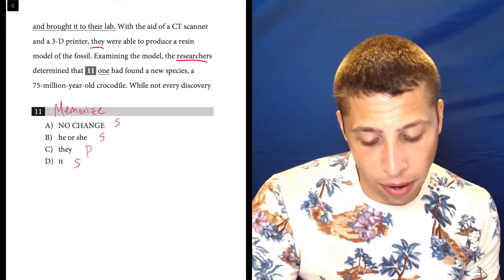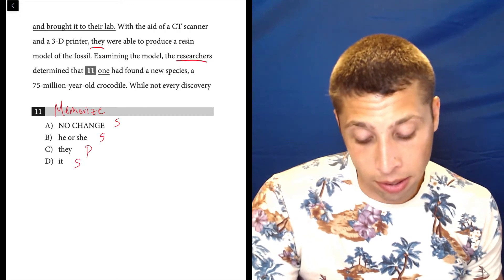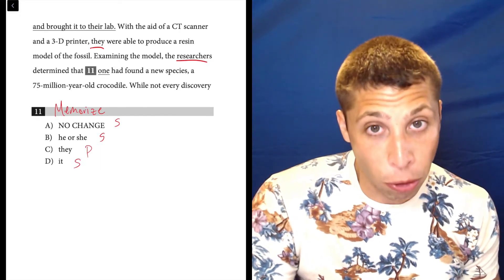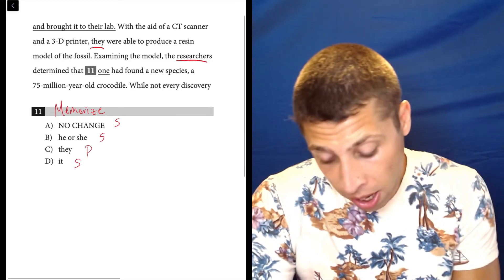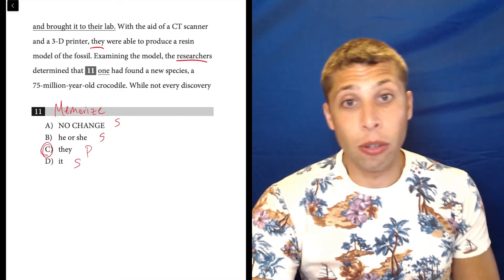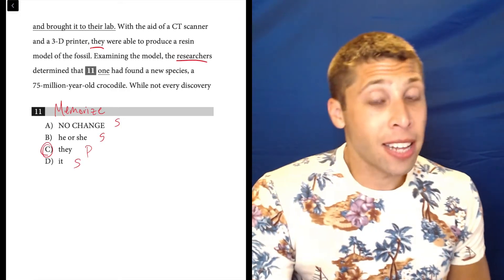Examining the model, the researchers determined that blank had found a new species, a 75 million year old crocodile. There's two instances of this in the two sentences. They're clearly talking about multiple people, multiple researchers.